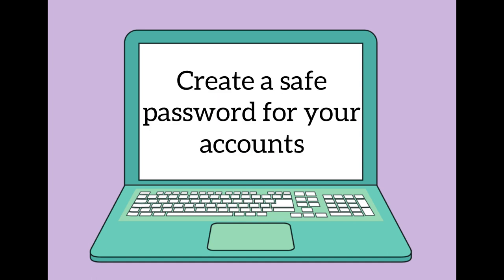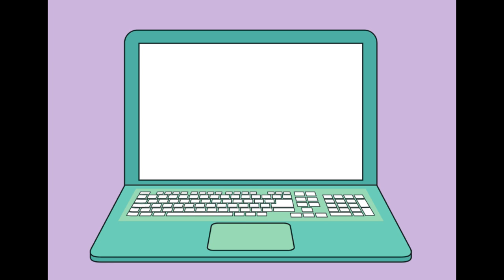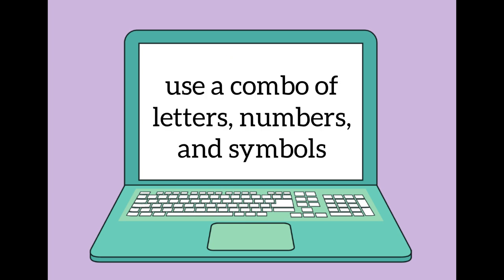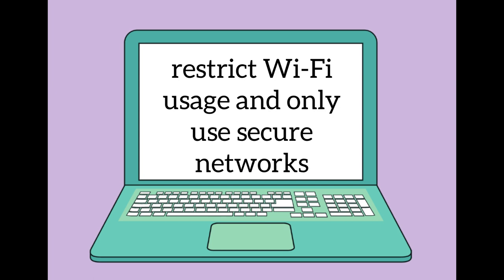Make sure you create a safe password for your accounts. Don't use your dog's name as your password, especially when you post lots of pictures of your dog on Facebook. Use a combination of letters, numbers, and special characters to create complex passwords. Also, restrict Wi-Fi usage when traveling. When you use other networks that aren't secure, hackers can hack Wi-Fi networks and get your private information. Only use Wi-Fi in secure places where you trust the network.